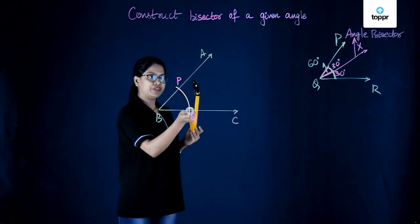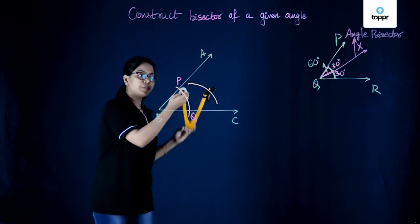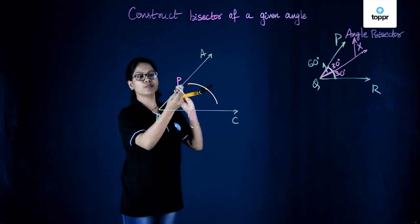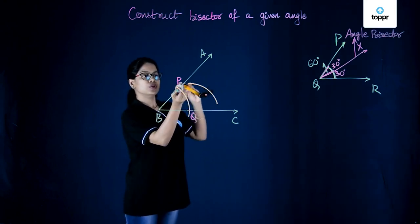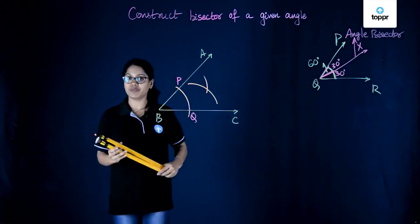So Q as the center, we cut an arc of the same measure and we repeat the same process but this time with P as the center. And the point where the two arcs meet is the point that we are looking for.